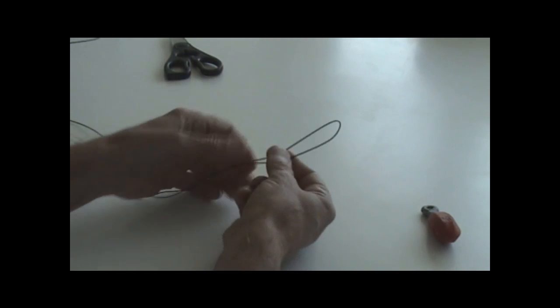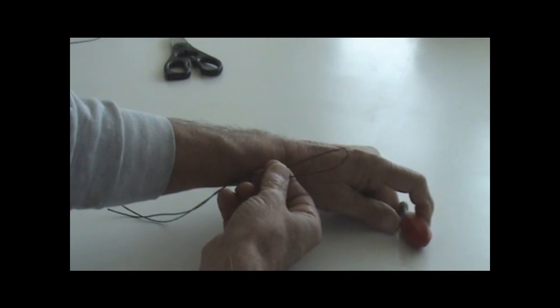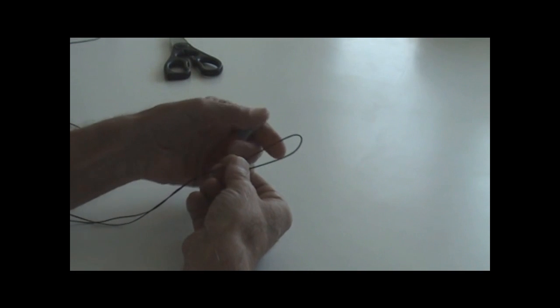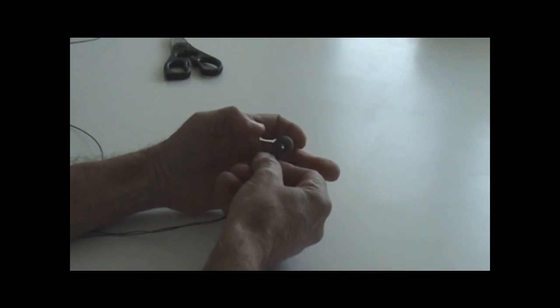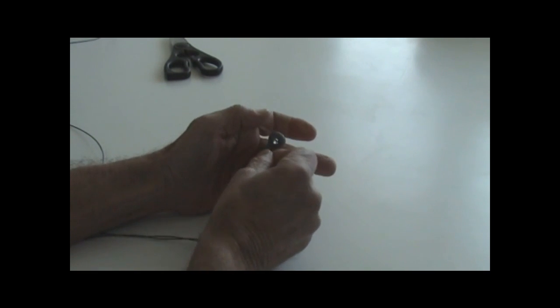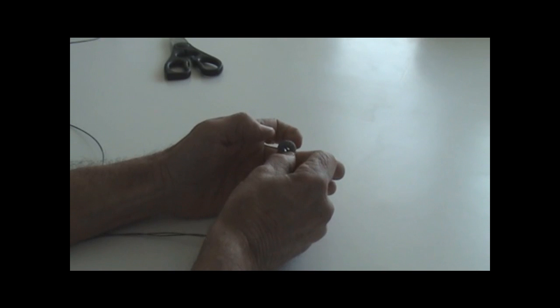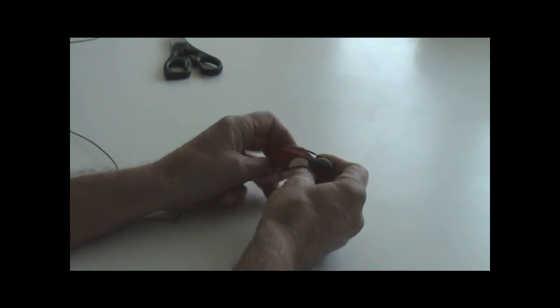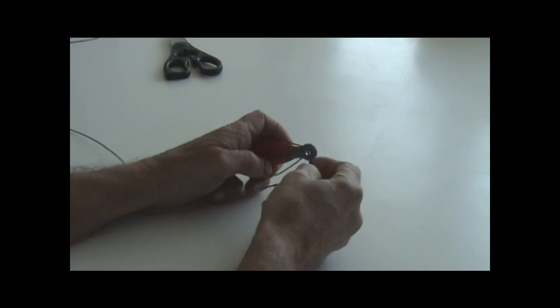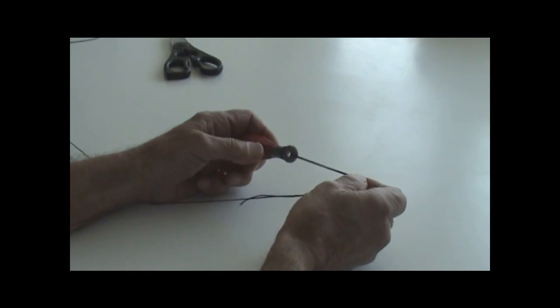In order to fasten the sinker, now you have a large loop. It's an easy process to place the sinker through the loop and just draw it down.